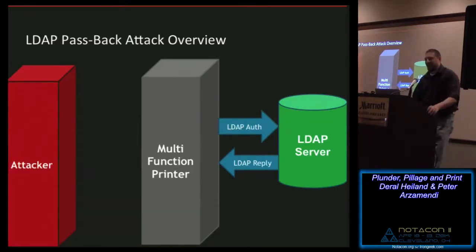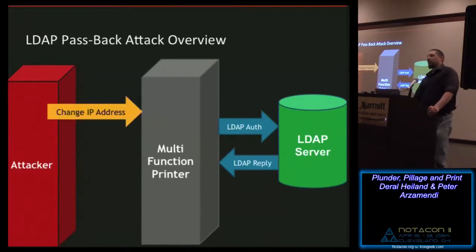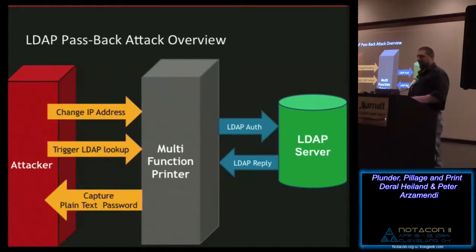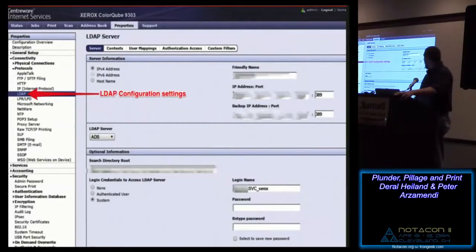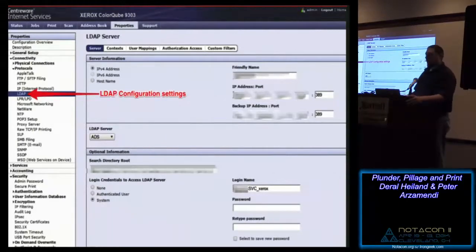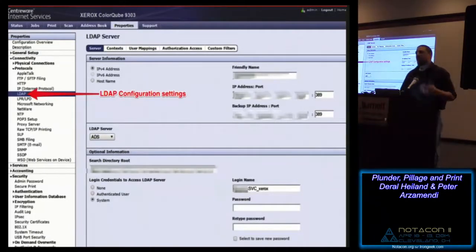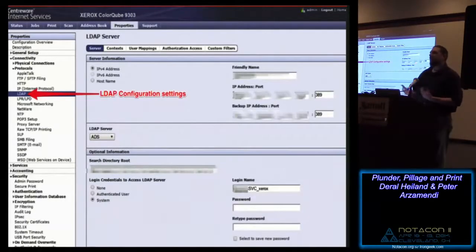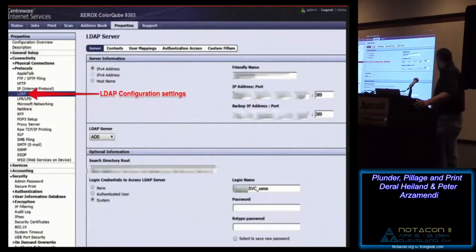Passback overview: you have your printer and your LDAP server. The printer is configured with credentials — username and password — to talk to the LDAP server and request email accounts. What we do is change the LDAP server IP to point to our system. The printer then sends its credentials to us instead. Here's an example on the actual ColorQube. Logged in with default password 1111, you can see the LDAP configuration: the friendly name, the actual IP address and port number. A lot of times it's using clear text — no SSL.